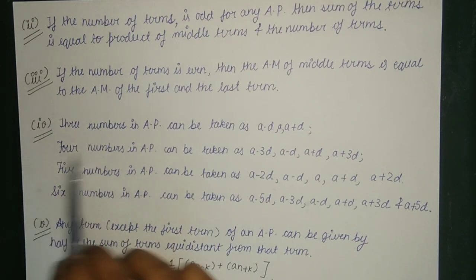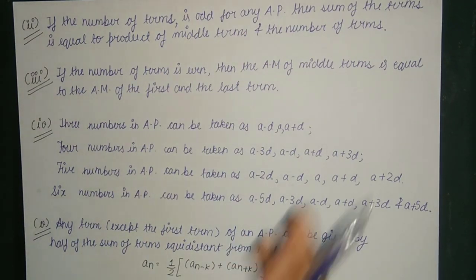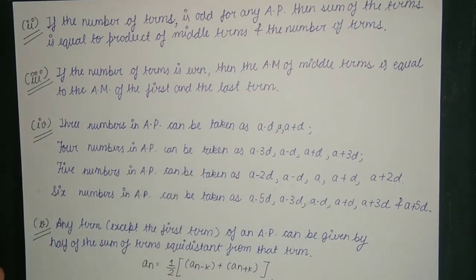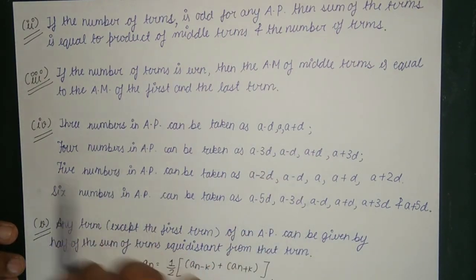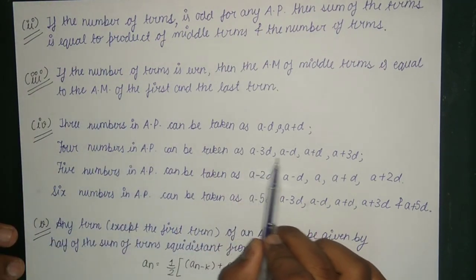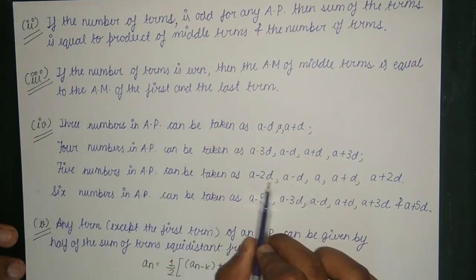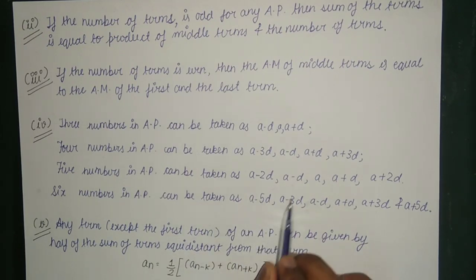When taking numbers in AP whose arithmetic mean is a: three numbers in AP can be taken as (a−d), a, (a+d). Four numbers in AP can be taken as (a−3d), (a−d), (a+d), (a+3d). Five numbers in AP can be taken as (a−2d), (a−d), a, (a+d), (a+2d). Six numbers in AP with arithmetic mean a and common difference 2d are: (a−5d), (a−3d), (a−d), (a+d), (a+3d), (a+5d).